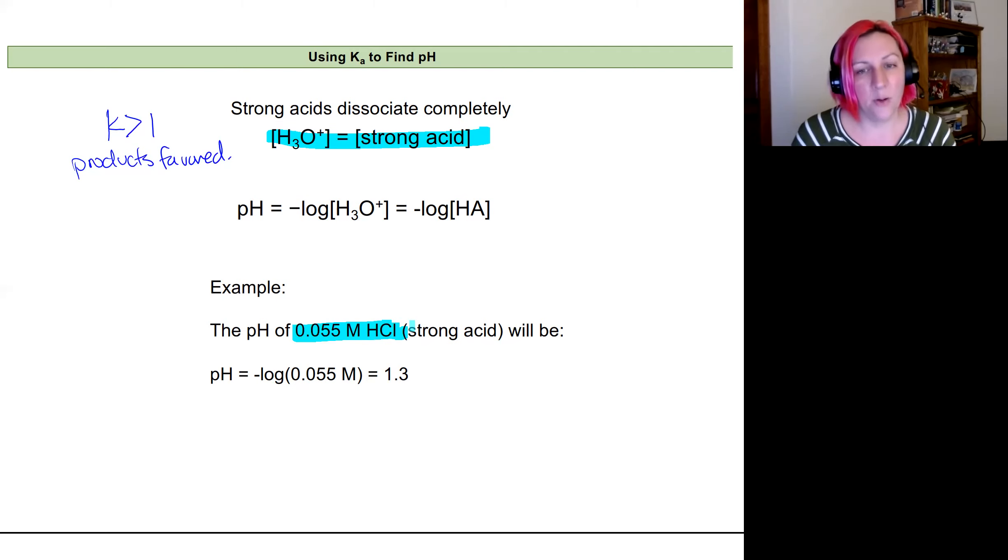Using this idea right here, that the concentration of the acid will be equal to the concentration of hydronium ions if it's a strong acid. So taking the negative log of that concentration gives me a value that is 1.3. And so that's a low pH.